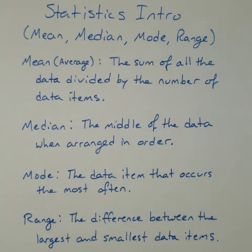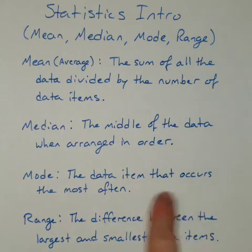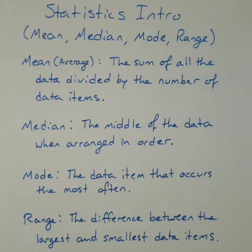The mode is the data item that occurs the most often. So in a set of data, you often have some numbers that appear more than once, and so the ones that occur the most are going to be the mode. Now it is also possible to not have a mode if everything occurs the same number of times. Like if every number is there one time, you don't have a mode.